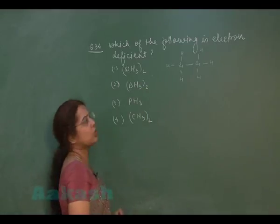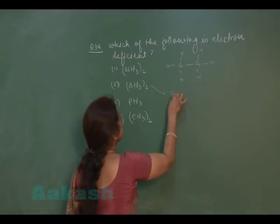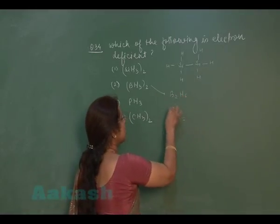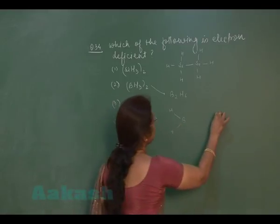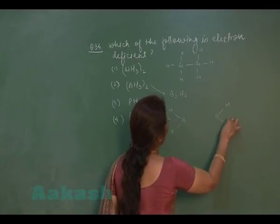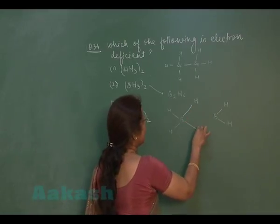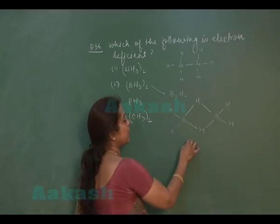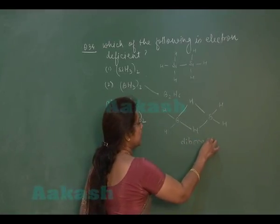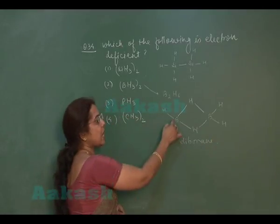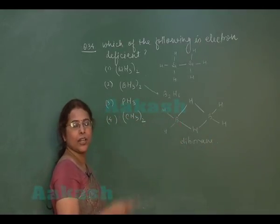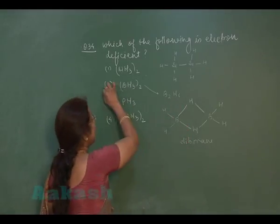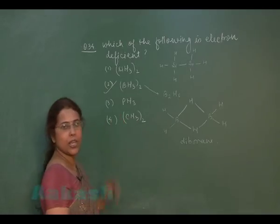Second option is BH3 whole twice. BH3 whole twice written as B2H6 and this is the compound having a structure boron hydrogen boron hydrogen hydrogen hydrogen. This is the dimer of BH3 and this compound is known as diborane. Since boron is having only 3 electrons in the valence shell and 3 electrons is shared with hydrogen atom. So this compound is electron deficient compound and that will be the answer.